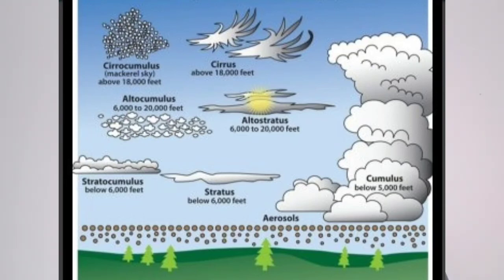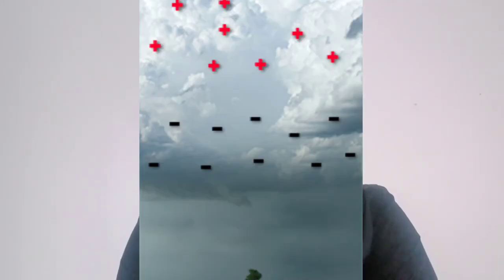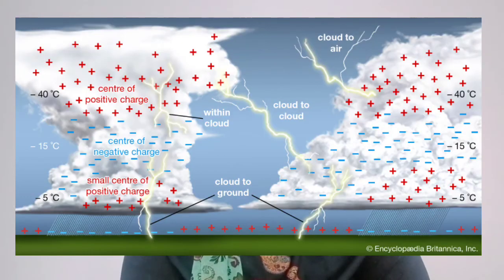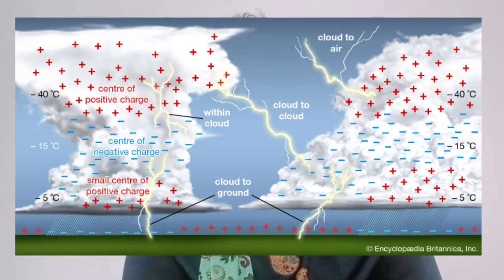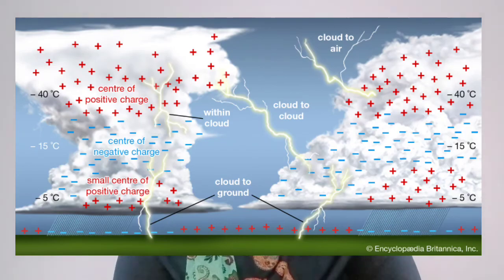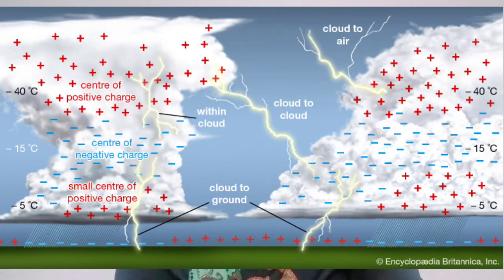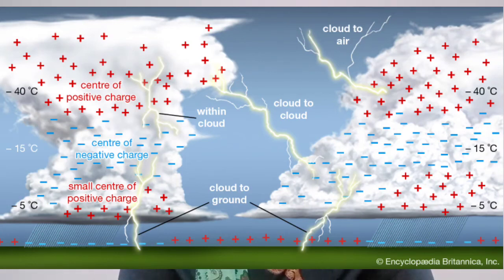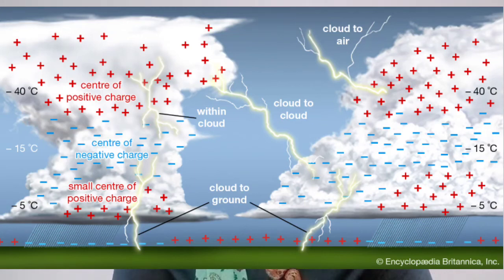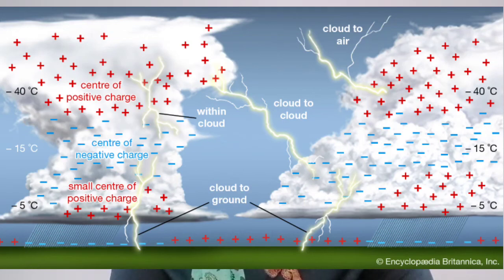The air around the lightning rises up due to heat. Cumulonimbus clouds have a positive charge at the upper end and a negative charge at the lower end, while the land has a positive charge. Due to these different charges, electric current develops, lightning occurs, and the air around the lightning rises. This rising air leads to the thundering sound.